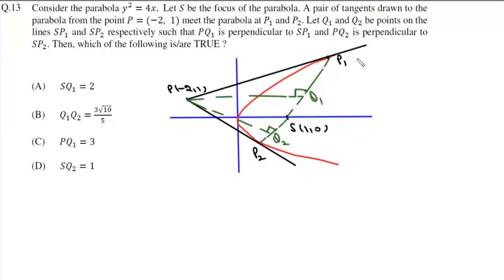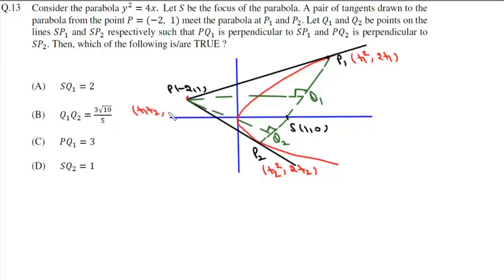P1 is (T1 squared, 2T1) and P2 is (T2 squared, 2T2), since A is 1. The point of intersection of tangents is given by (A·T1·T2, A·(T1 + T2)), and with A equal to 1, this gives (T1·T2, T1 + T2). So we get T1 times T2 equals minus 2.